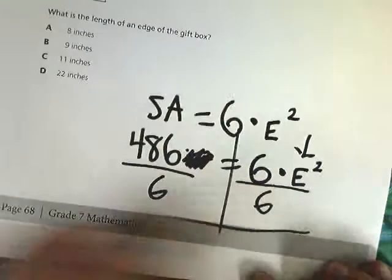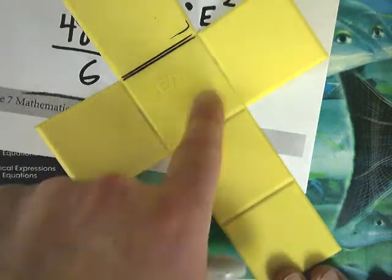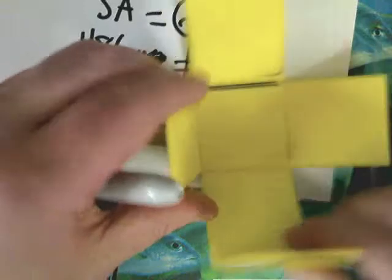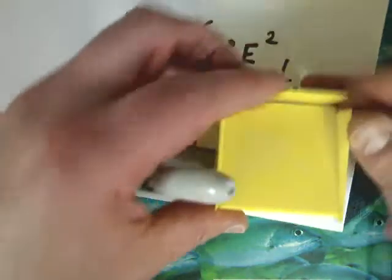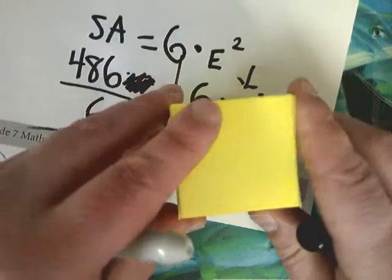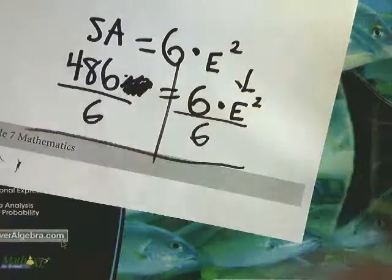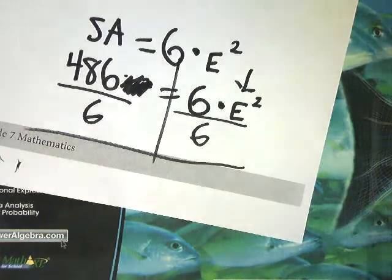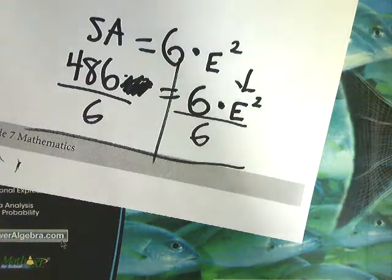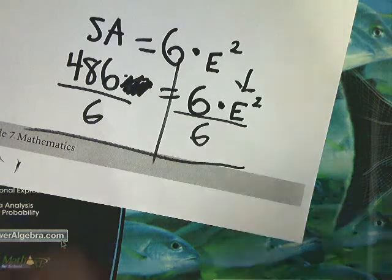What that does for me is it allows me to take the area of all these squares together and just find one of them. So I'm taking all of these things and getting rid of them so I can look at one single side at a time. So divide by 6 for 486. Dividing by 6 is 81.